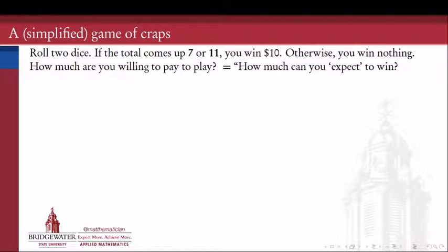Otherwise, we win nothing. So it's kind of like the coin flip example, but there's more than one possibility for how to win. We could get a 7 and win, we could get an 11 and win, or if I get anything else, then I don't win.